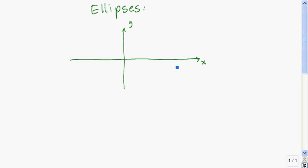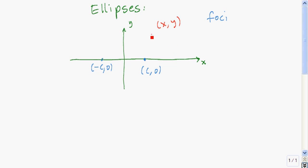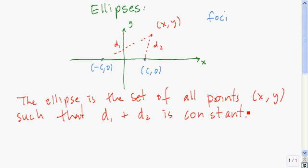To get an ellipse, we start with two distinct points called the foci. So negative c, comma, zero and c, comma, zero are called the foci of the ellipse. The singular would be one focus. The point xy is on the ellipse if the distance to that focus, which I'll call d1, plus the distance to that focus, which I'll call d2, is a constant. The ellipse is the set of all points for which d1 plus d2 is constant.